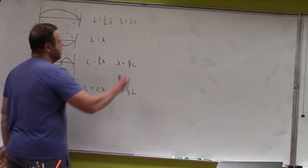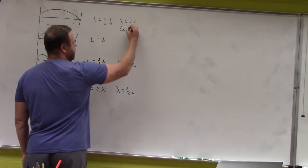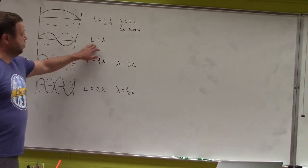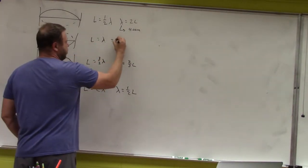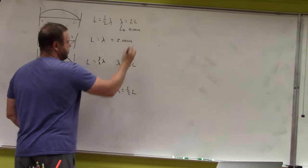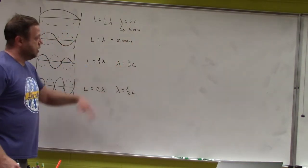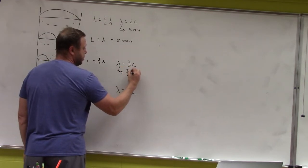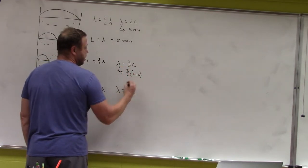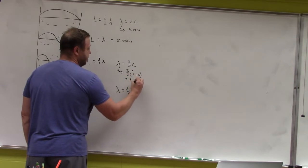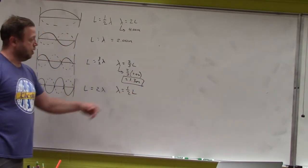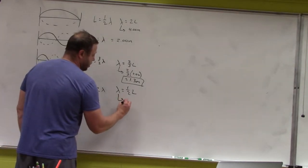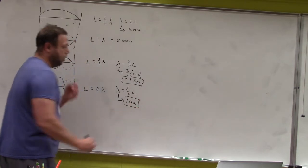Now plugging in the values since each string is two meters in length: for the first waveform, lambda equals two times L, so wavelength is four meters. The second gives wavelength equal to two meters. The third gives two-thirds of two, which is approximately 1.3 meters. And the last one gives wavelength equal to exactly one meter.